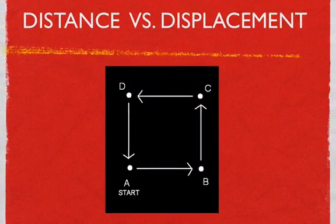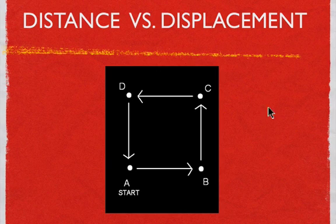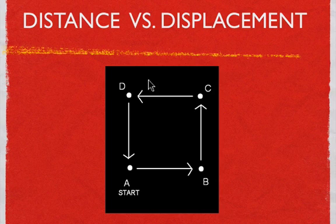Coming back to the earlier example: the distance is 20 meters. The displacement is our change in position — we started here, went round and round, came back and ended in the same place. So our change in position is zero meters.